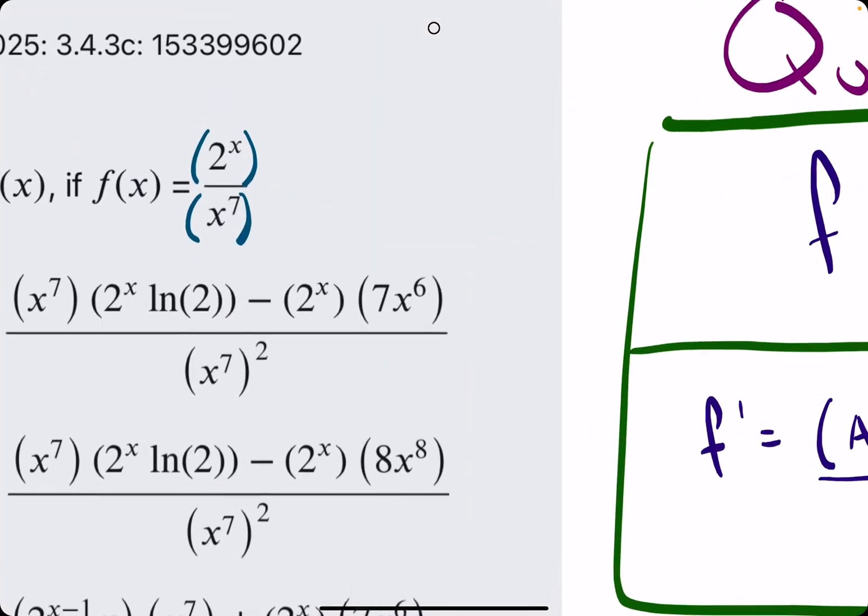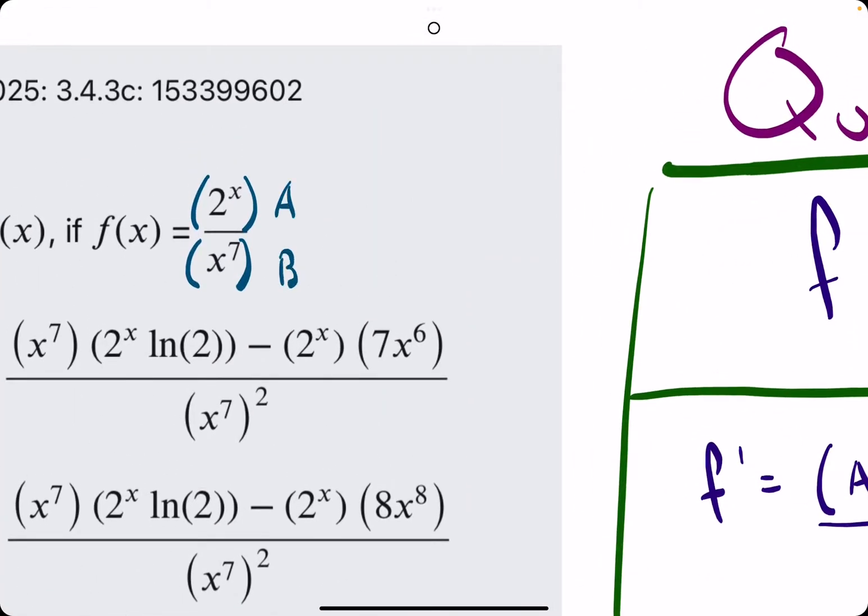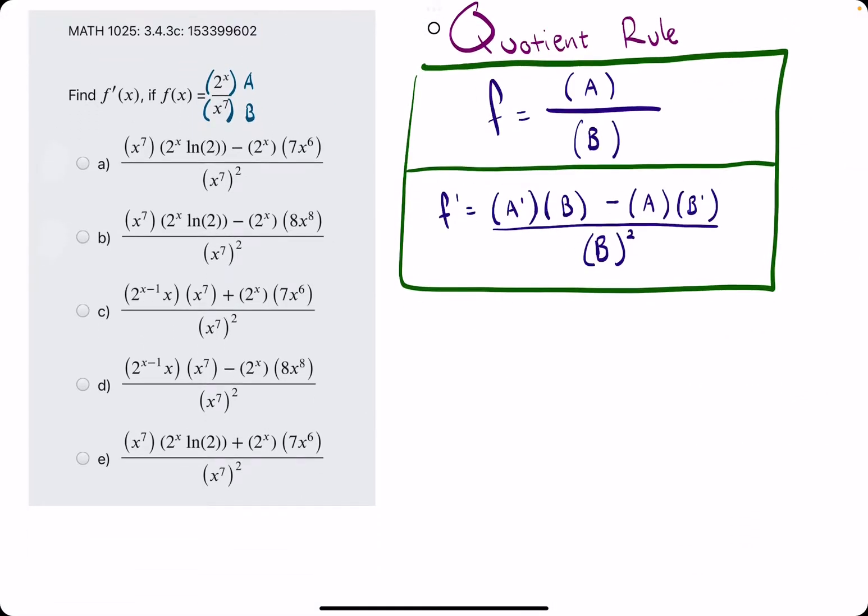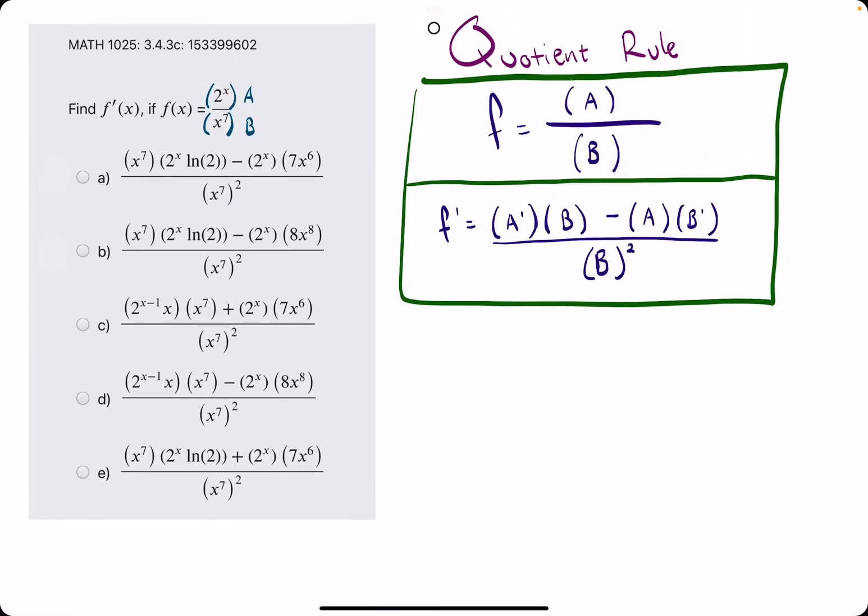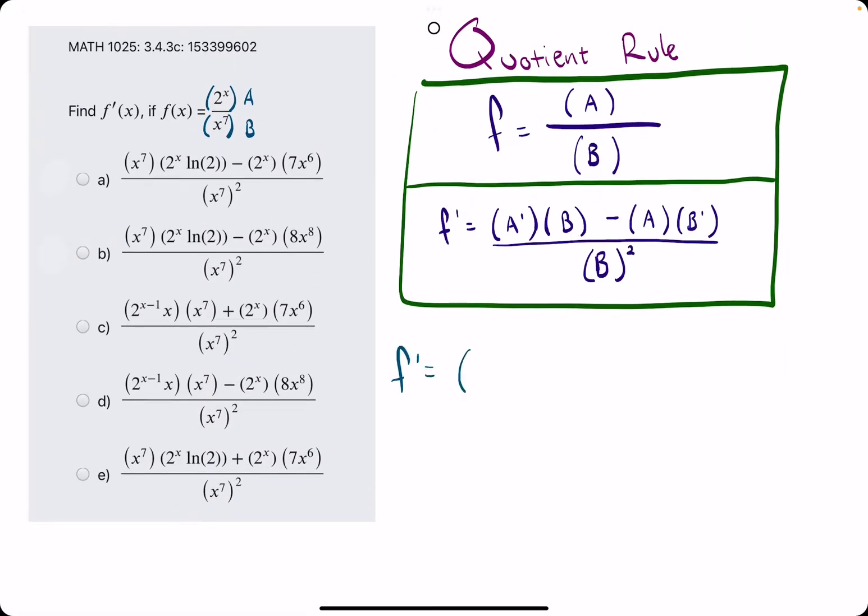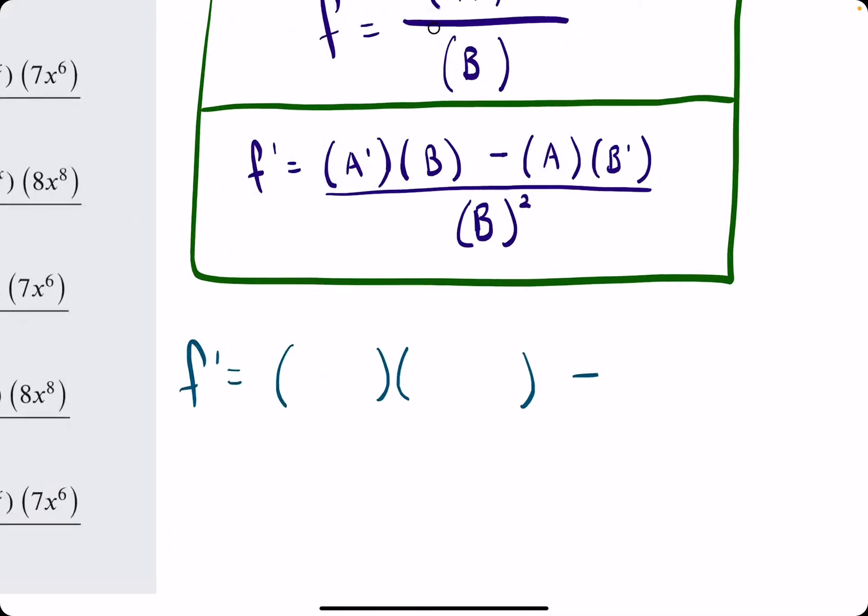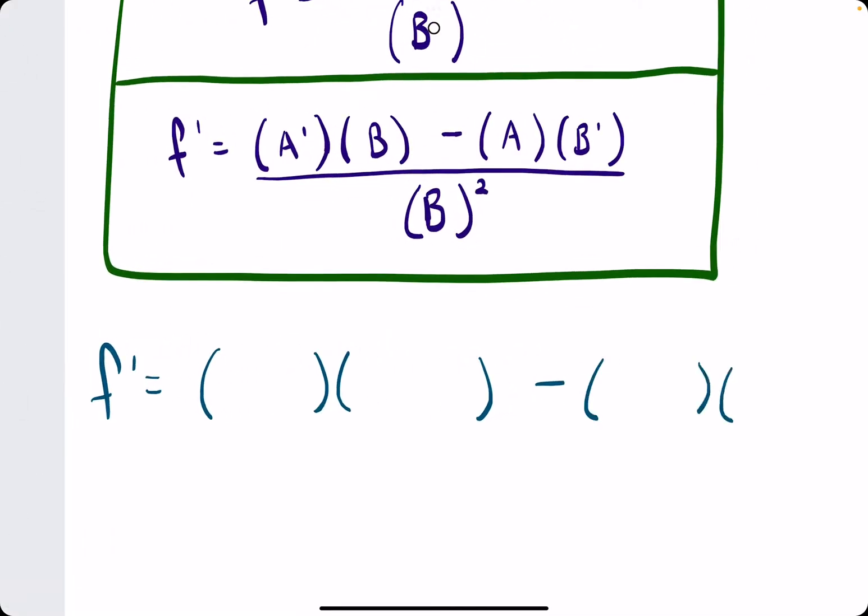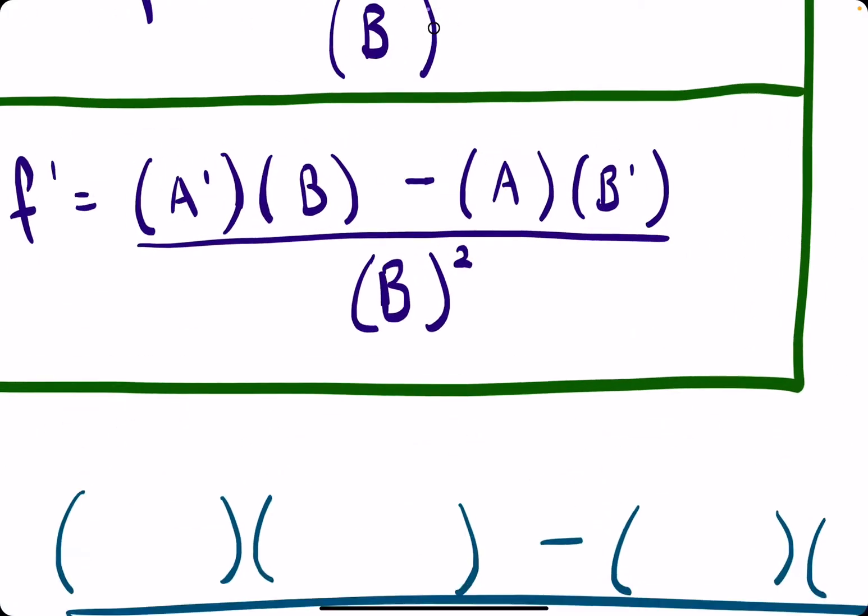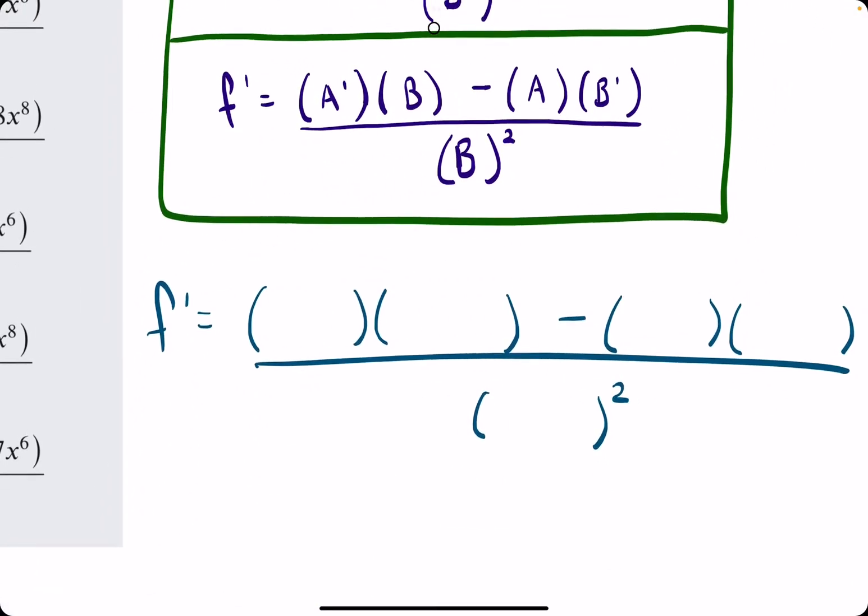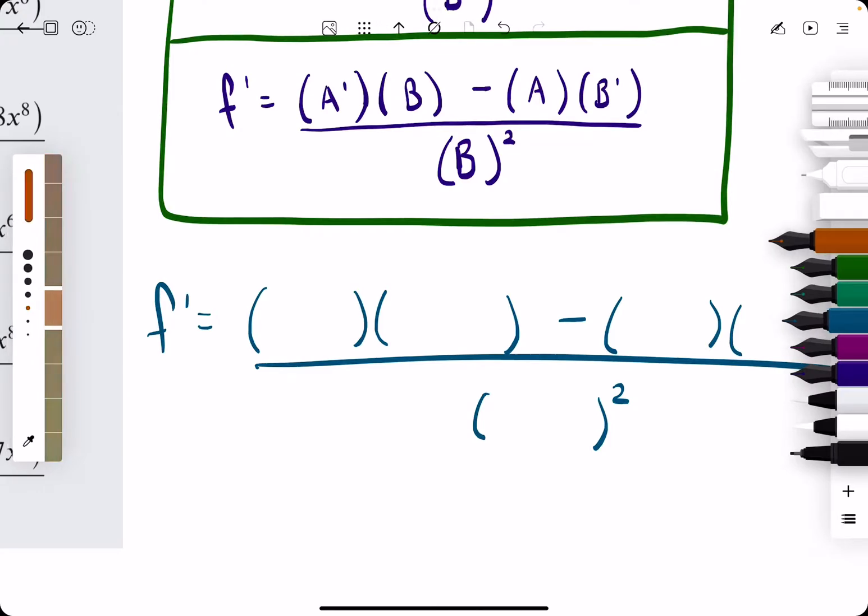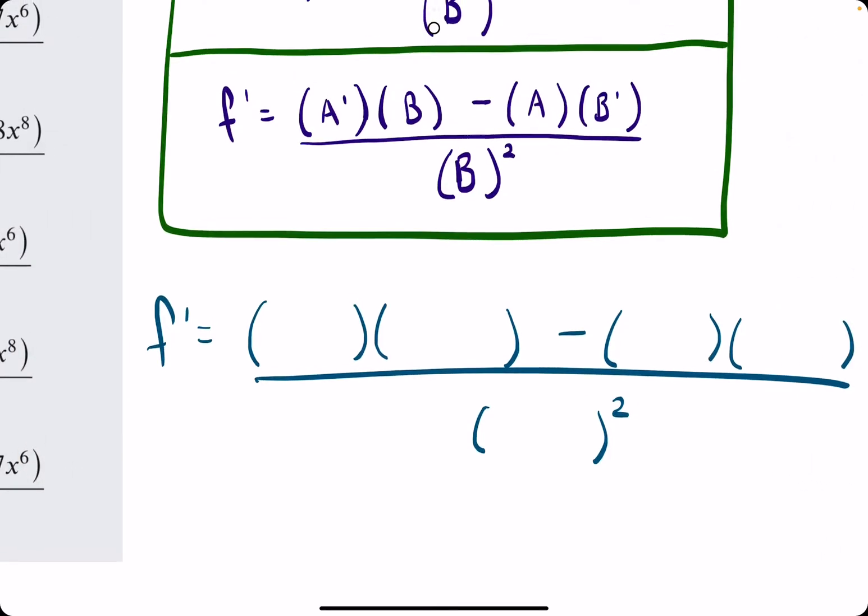In this case, our A is our numerator, B is the denominator. So finding the derivative, all we need is A prime times B minus A times B prime all over B squared. We can go ahead and set up this format for any problem where we have to use quotient rule.